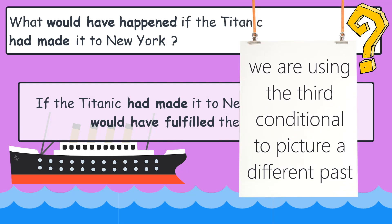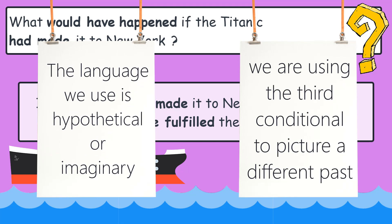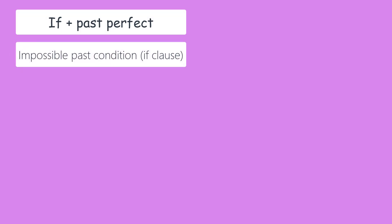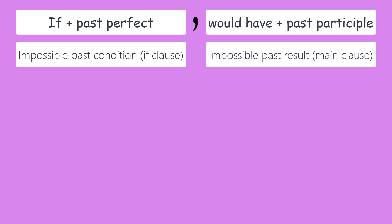As we can see from the examples, we are using the third conditional to picture a different past. The language we use is hypothetical or imaginary. We use the past perfect tense to talk about the impossible past condition — the if clause. We use would have plus past participle to talk about the impossible past result, which is the main clause.